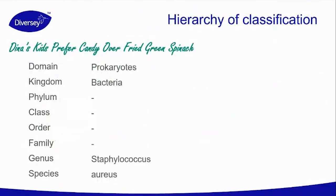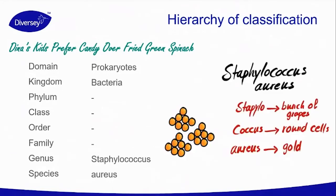The hierarchy of classification: there are many different types of bacteria and they all belong to the prokaryotic domain. One bacteria we all know and hear a lot about is Staphylococcus aureus. Staphylococcus is the genus and aureus is the species. There is a meaning behind these names: Staphylococcus refers to a bunch of grapes, coccus because they look like round cells, and aureus for the golden color of this bacteria.